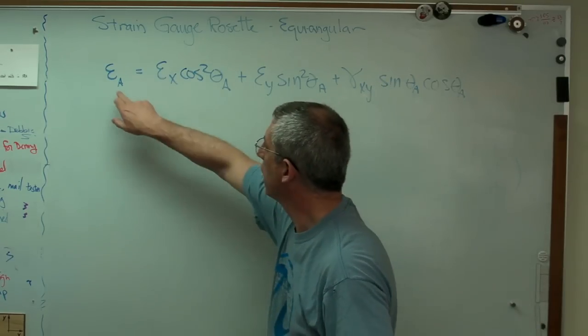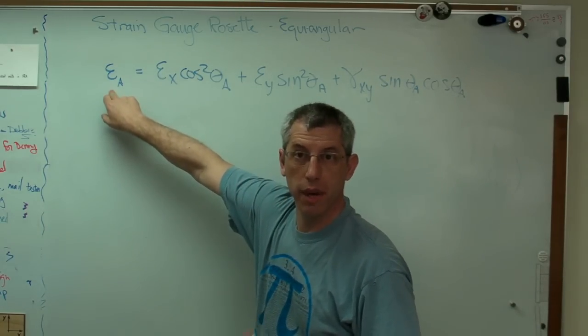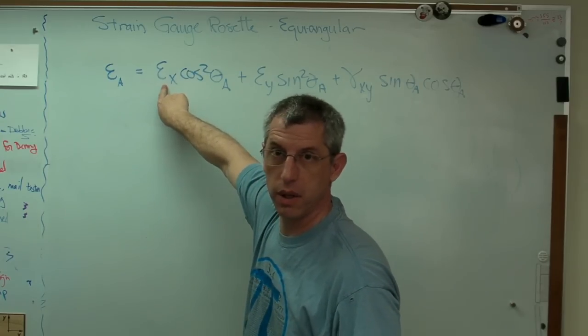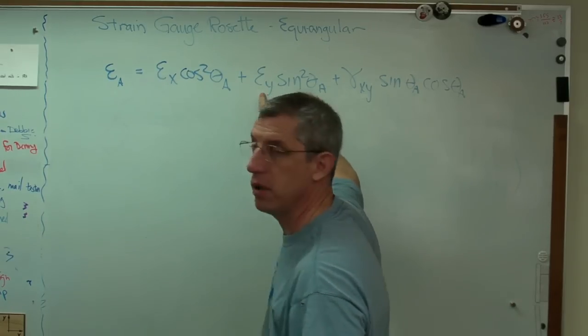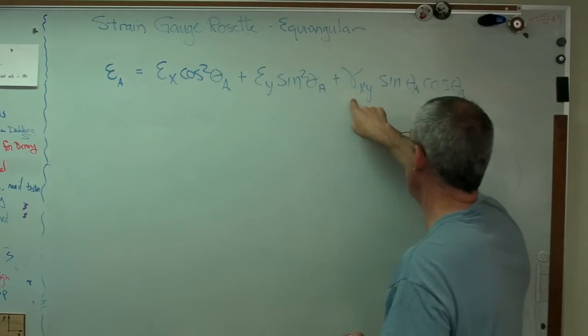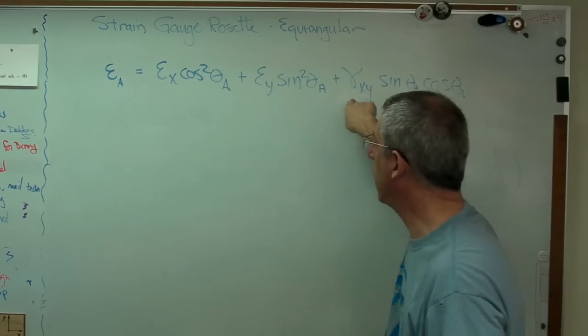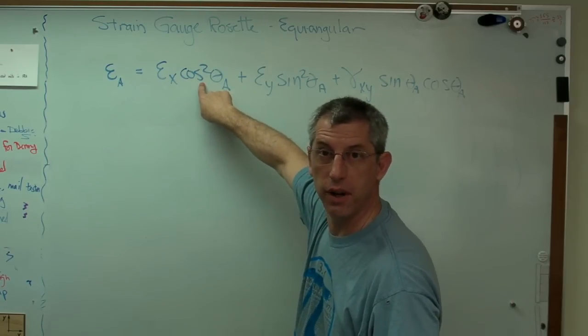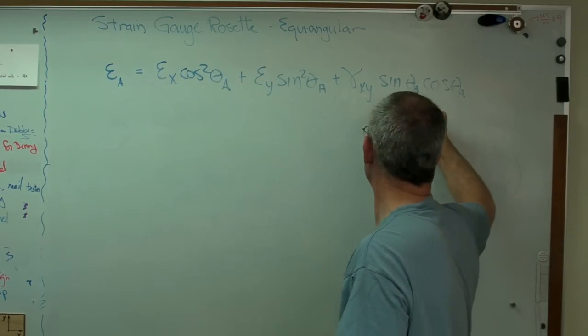Let's look at what this means. There's epsilon A. That's the thing we're measuring using the strain gauge rosette. There's epsilon X, that's one of the things I want to find out. Epsilon Y, another thing I want to find out. Gamma XY, a third thing I want to find out. Well, cosine squared theta, that's just a number based on an angle. So's that. So's that.